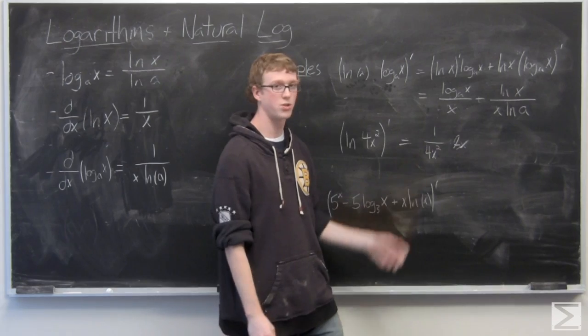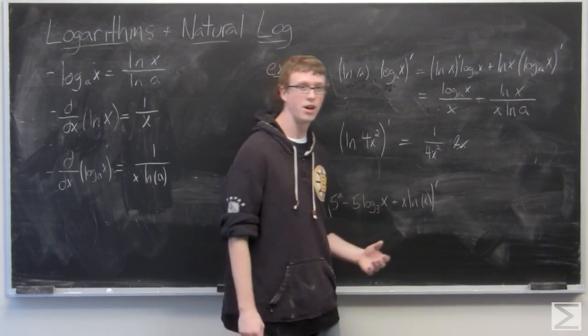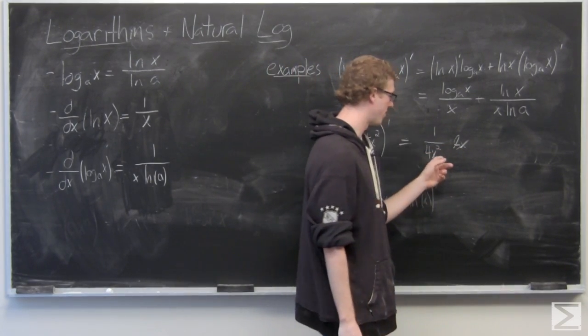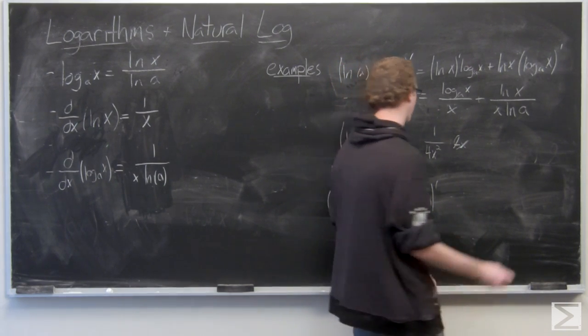Now we have 8x over 4x squared. The 1x in the numerator cancels with 1 of the x's in the denominator, and we're left with 2 over x.